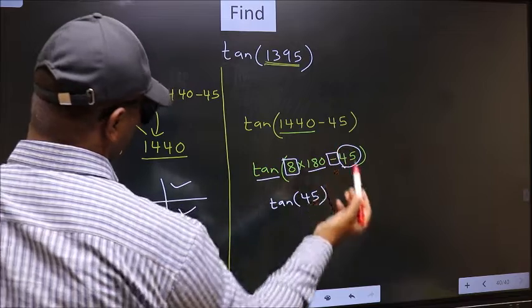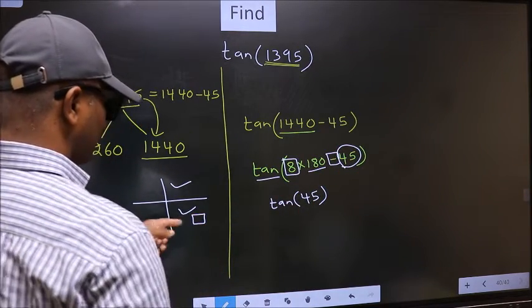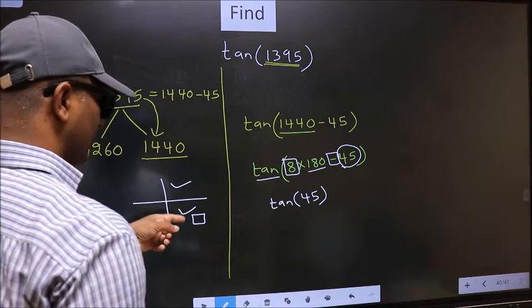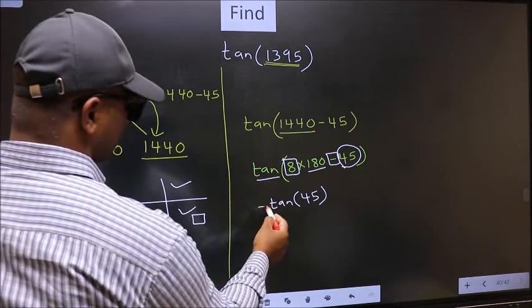Here we have negative. That means, the angle lies in the fourth quadrant. And in the fourth quadrant, tan is negative. So we should put negative.